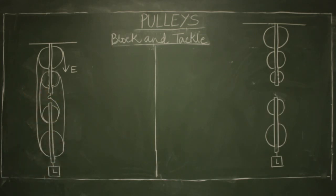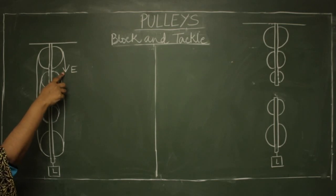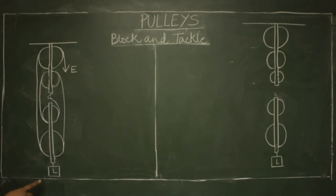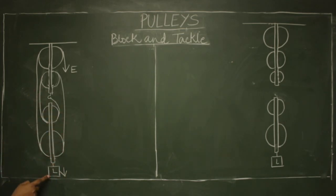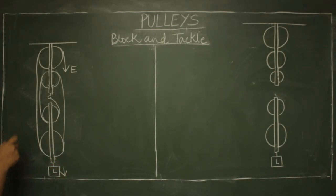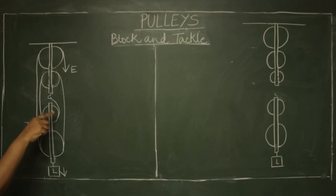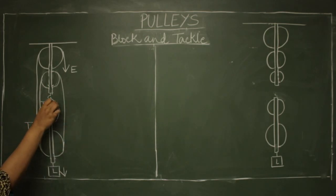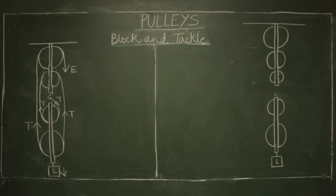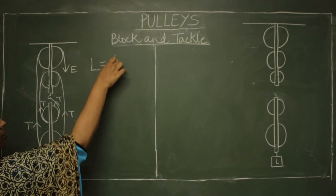Let's now mark the direction of all the forces acting on the system. Effort is definitely in the downward direction. The force due to the load will also be in the downward direction. In this diagram, you can observe that the load is supported by four strings — one, two, three, and four. All four strings are supporting the load, and therefore the force due to the load is equally divided into four parts. This tension acts in the upward direction in all four strings. So L equals four T.